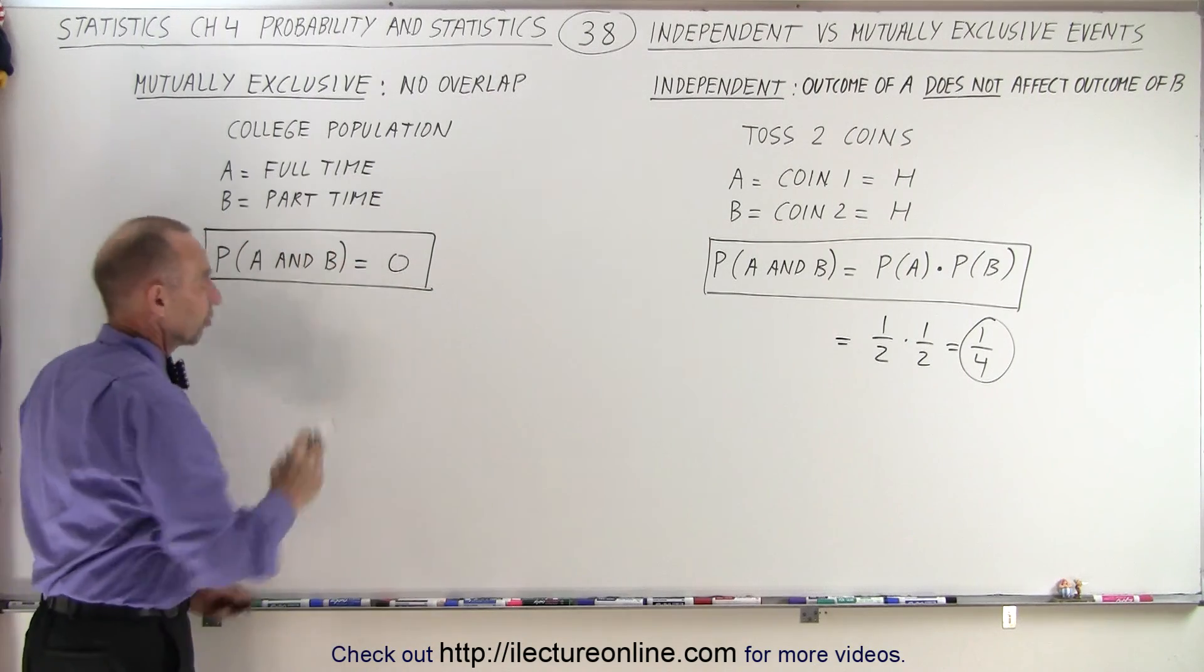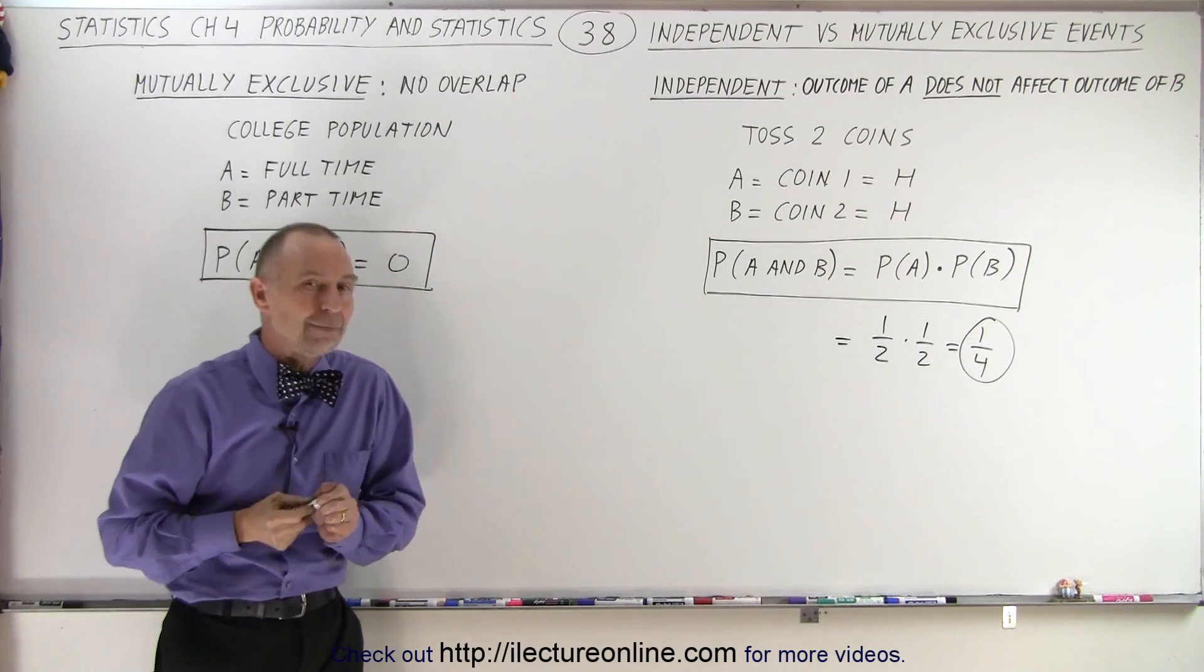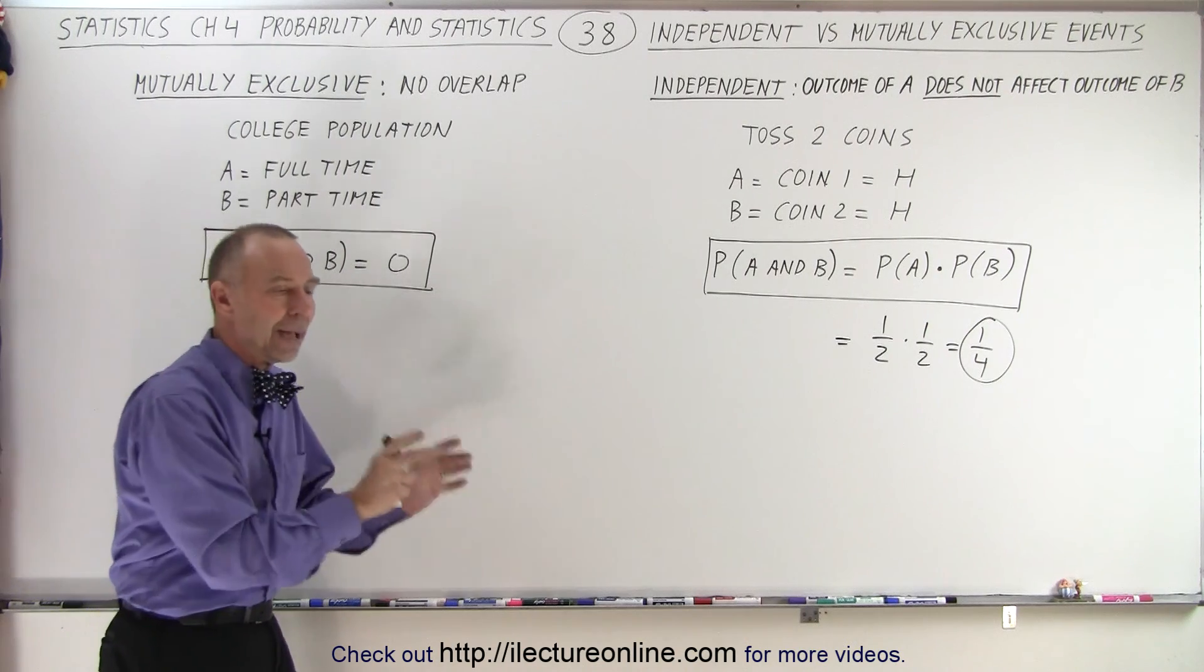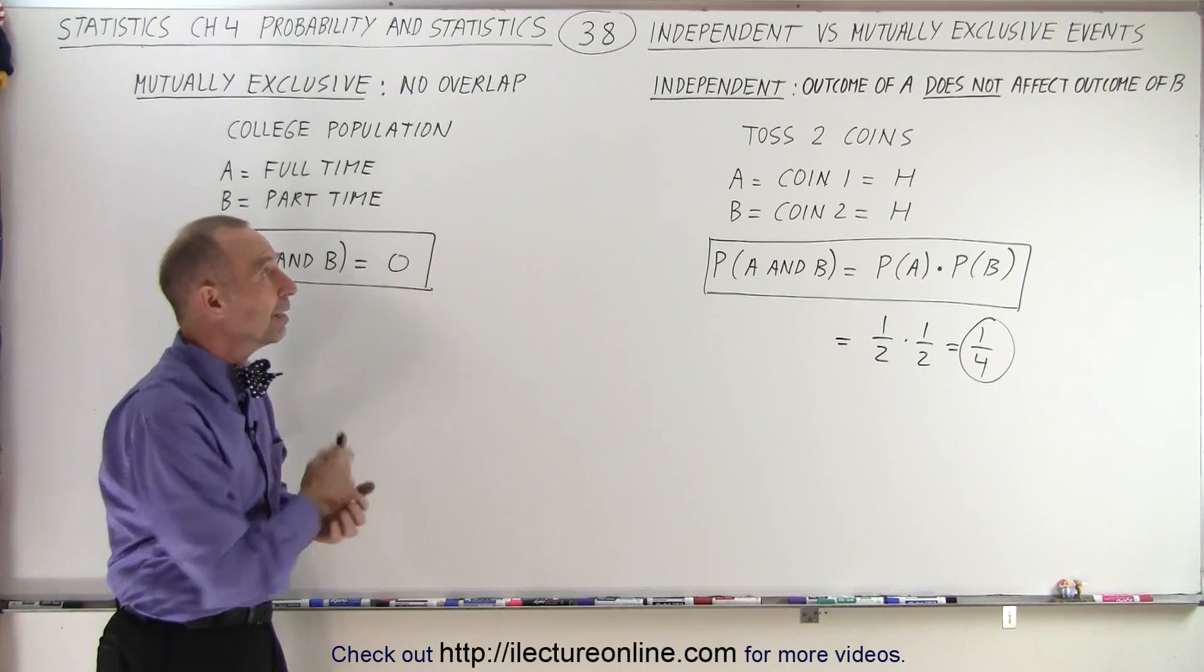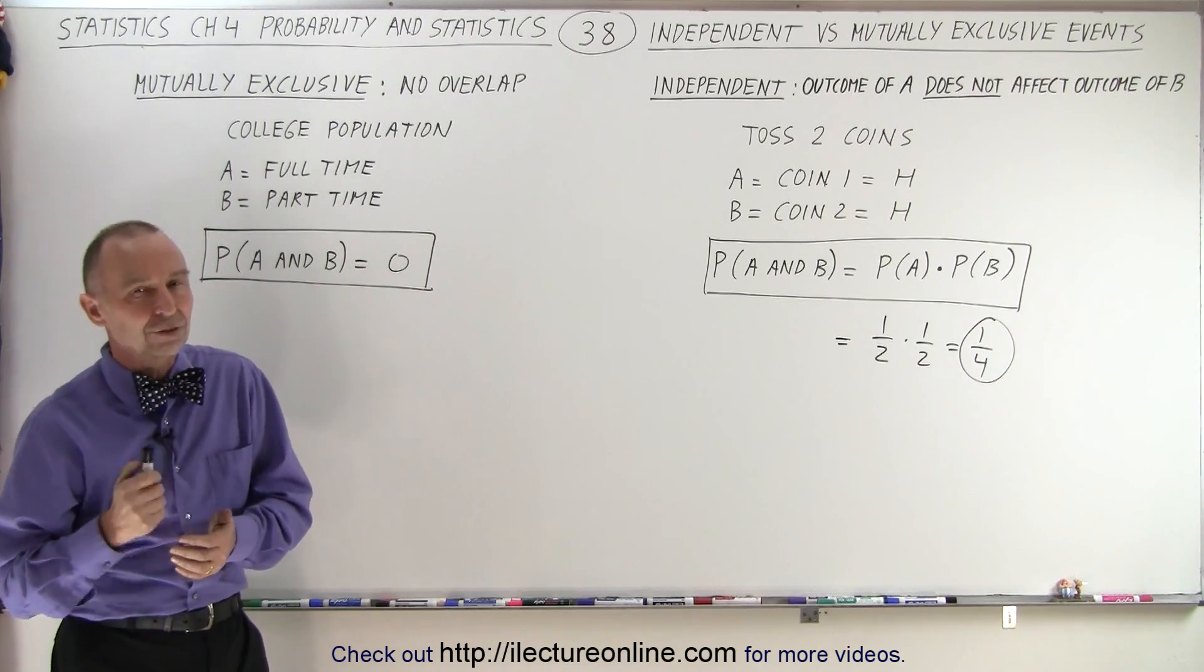And here, when they're mutually exclusive, the probability of A and B will always equal zero because you cannot have them happen at the same time. And that is the difference between independent events and mutually exclusive events.